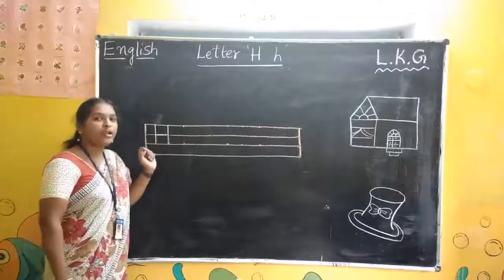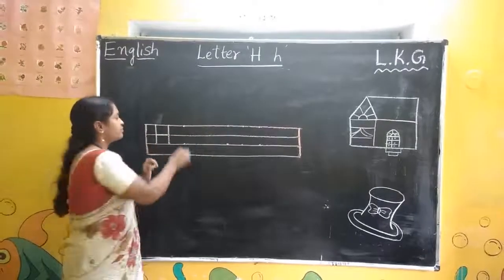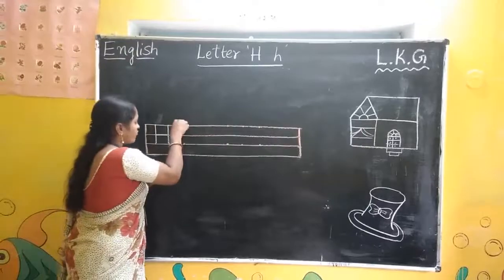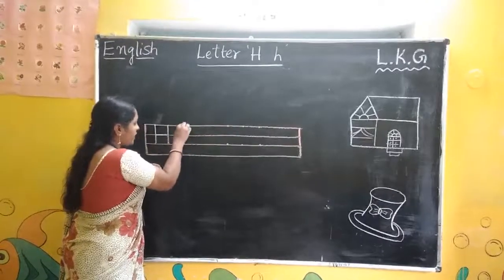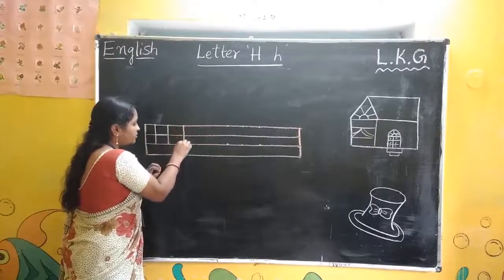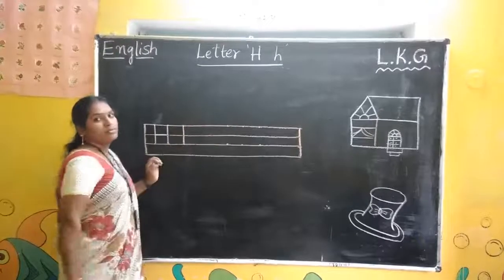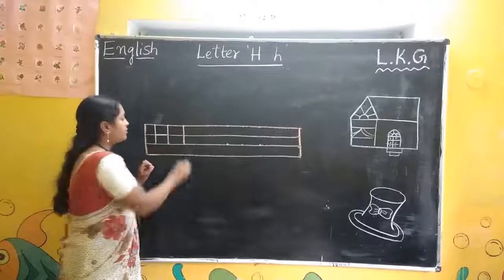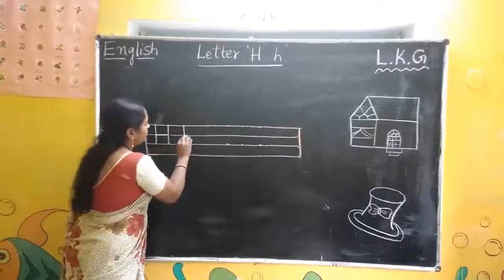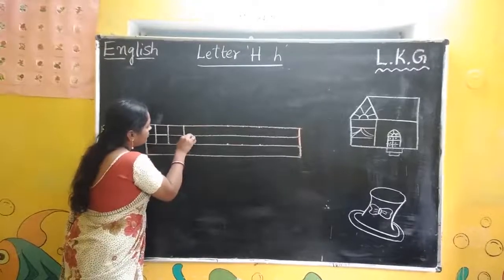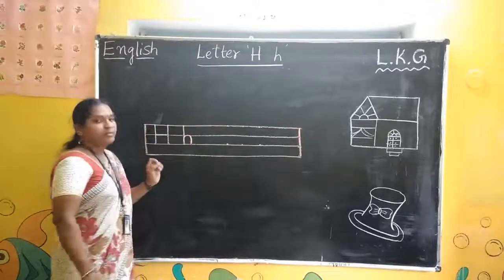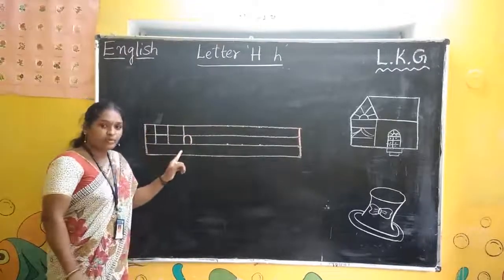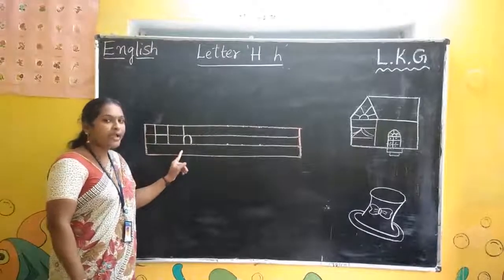Now small H. First line to third line, standing line. And curve. This is small H.